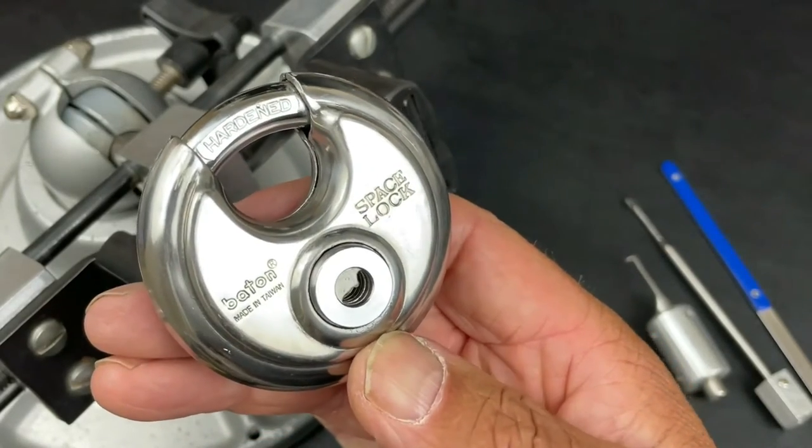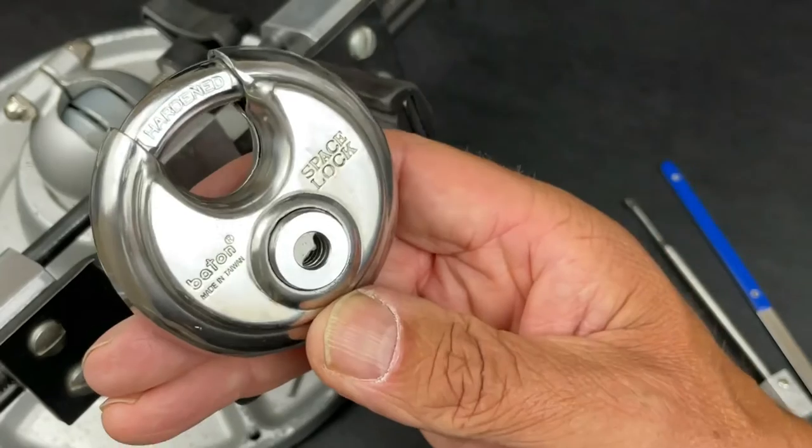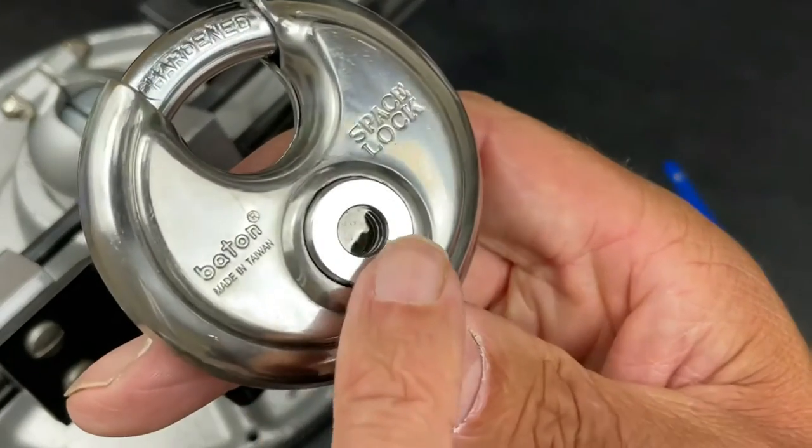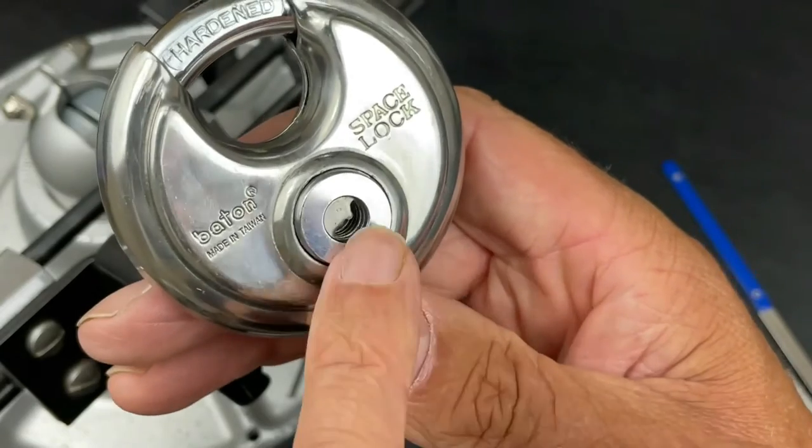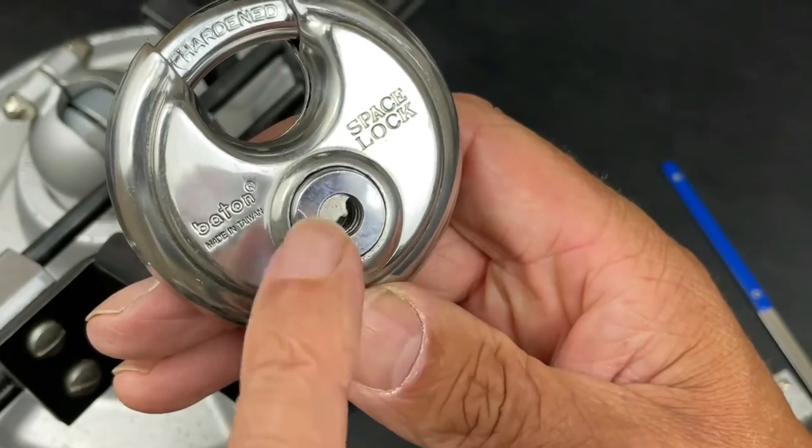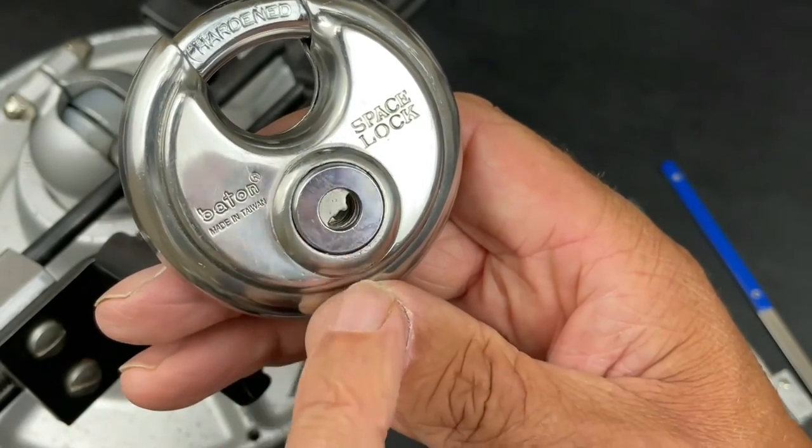Okay guys, so something slightly different today. As you can see, we've got this Baton Discus lock here, and you can actually see the keyway there. We've got an Abloid profile style keyway here. I believe these have got seven discs in it, and I believe that they've got false gates and true gates right the way through the lock.